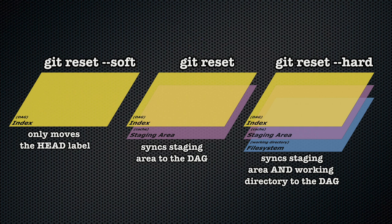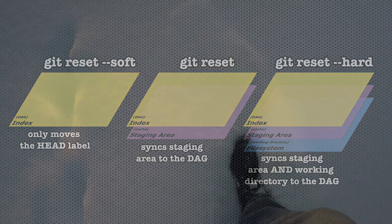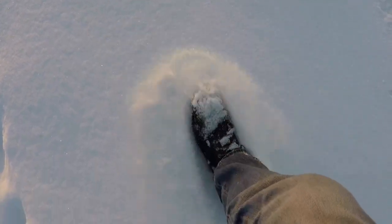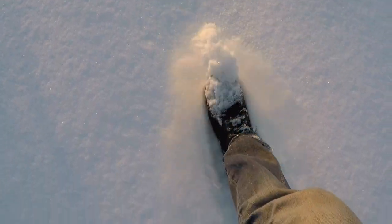But the use of git reset is not limited to clearing out the staging area. You can also reset to an earlier state of the DAG, either by referencing a specific commit or, as it's used rather often, by telling it how many steps to go back from the current HEAD.